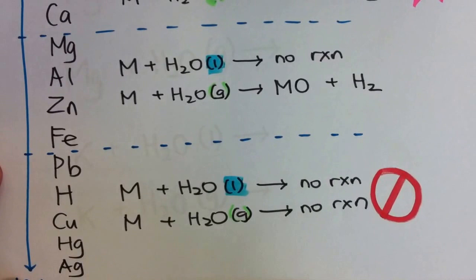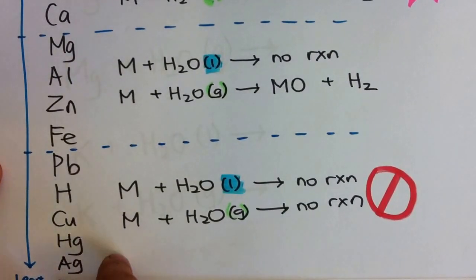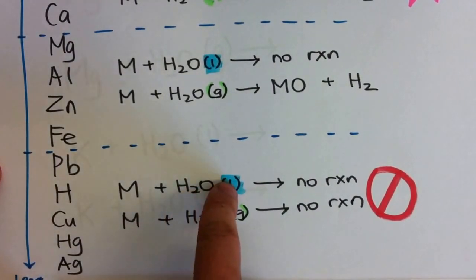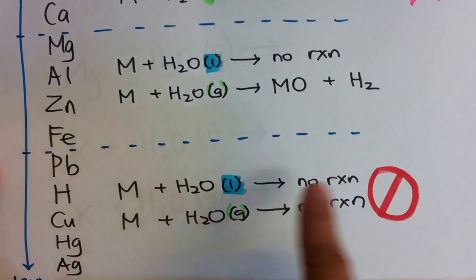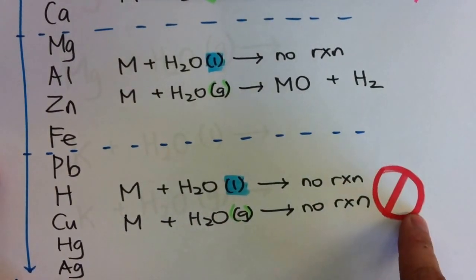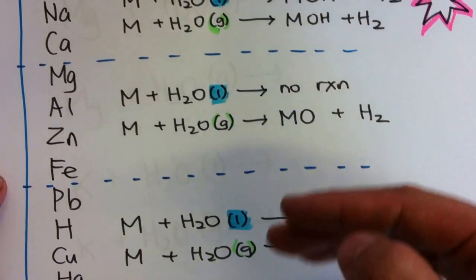The last group of metals simply can't be bothered. They are unreactive from lead all the way down. With liquid water and steam, there is basically no reaction. So from there, that's how we categorize.